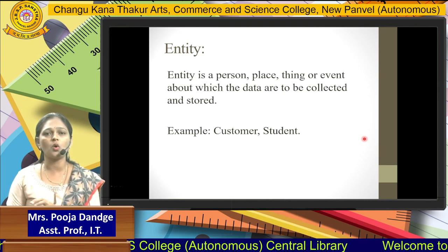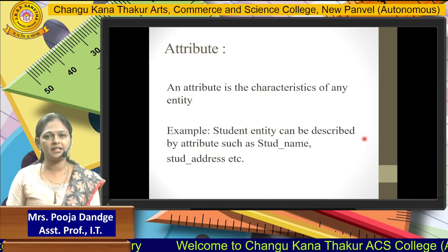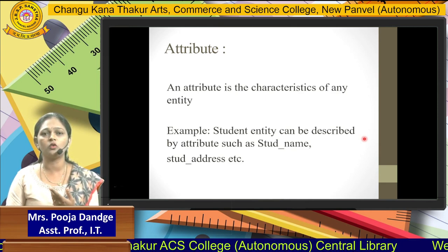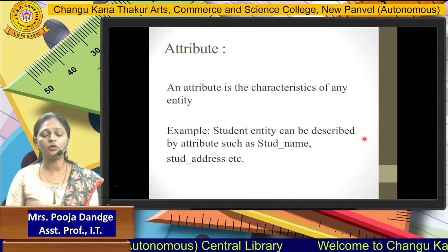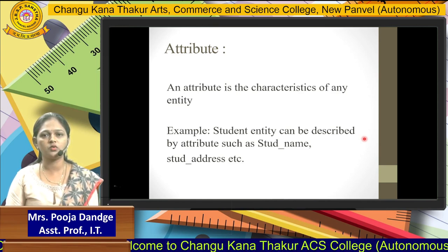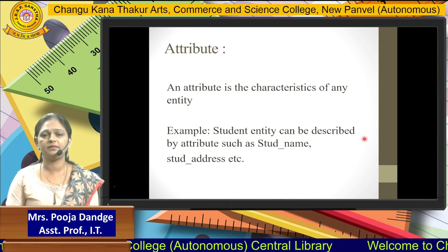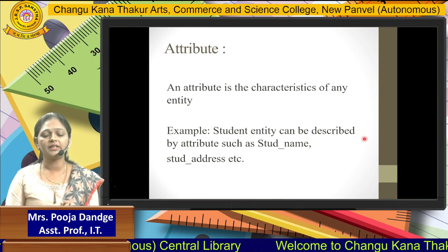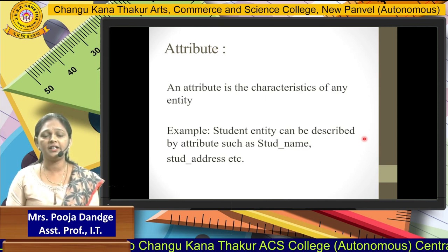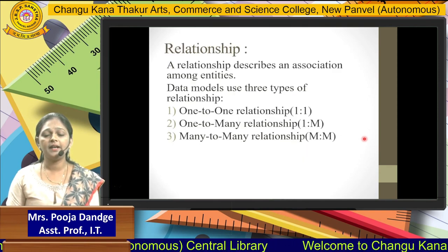In short, an entity stores all the records for a particular place or person. The next block is the attribute. An attribute is the characteristic of any entity. For a particular entity, the attribute stores its characteristics. For example, a student entity can be described by attributes like their ID, name, address, class, and division. So an attribute is the characteristic of an entity — the entity is described in the form of its attributes.